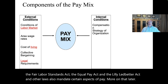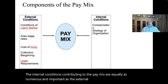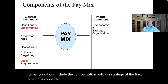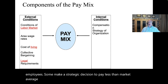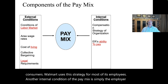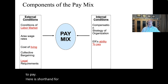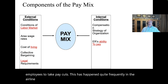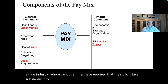Internal conditions contributing to the pay mix are equally numerous and important. These include the compensation policy or strategy of the firm. Some firms choose to pay above market average to attract top employees. Some make a strategic decision to pay less than market average to keep costs down and pass savings on to consumers — Walmart uses this strategy for most of its employees. Another internal condition is simply the employer's ability to pay. Firms on the edge of bankruptcy are not giving raises; they may be asking employees to take pay cuts, as has happened frequently in the airline industry.